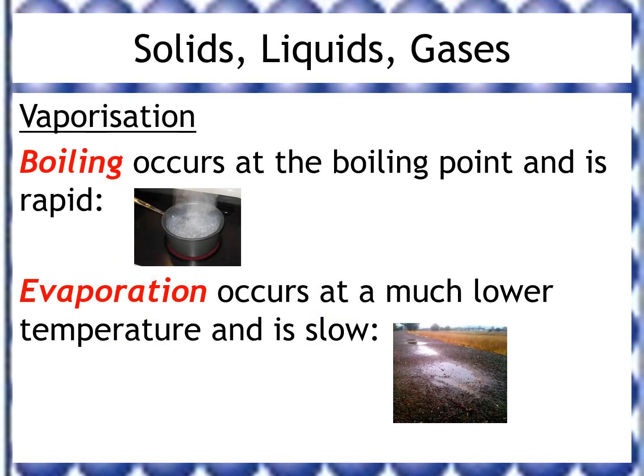We should also distinguish between boiling and evaporation when changing from a liquid to a gas. Boiling is a rapid process and always occurs at the boiling point — water must reach 100°C to boil and become water vapor. Evaporation happens at much lower temperatures and is slow; a puddle can evaporate without reaching 100°C, but the process takes quite a long time.